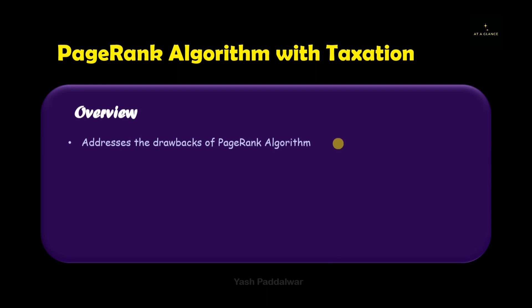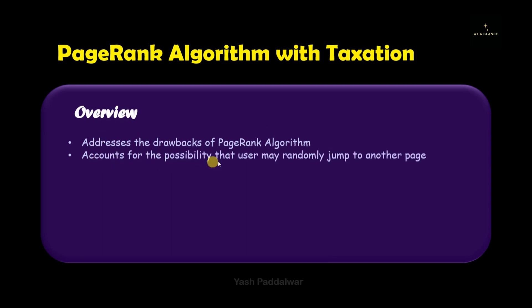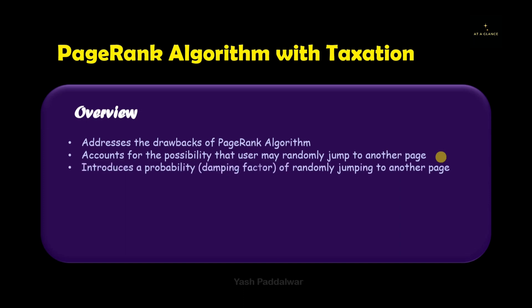This technique is specially designed to overcome the drawbacks of the PageRank algorithm. It accounts for the probability that the user may randomly jump from one page to another. In the earlier version of the PageRank algorithm there was no provision for this — it was assumed by default that the user would follow a particular link. But a user can also randomly jump from one page to another, so this has to be accounted for. This term is called the damping factor or taxation factor, also referred to as the teleportation term.